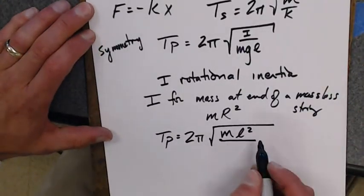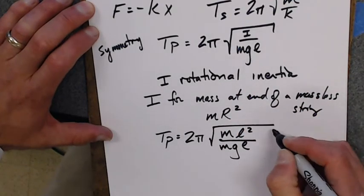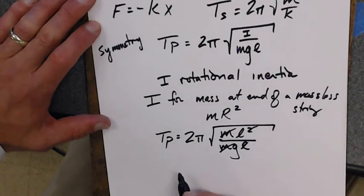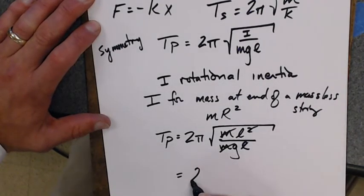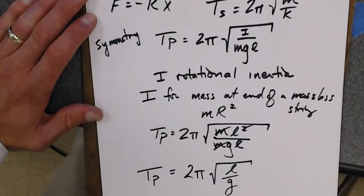All over m, g, l. Masses cancel out. This l cancels out. What I end up with is 2 pi times root l over g is the period of the pendulum.